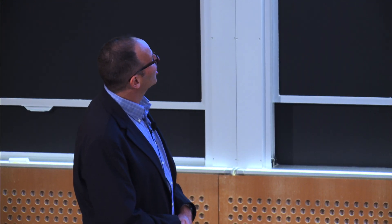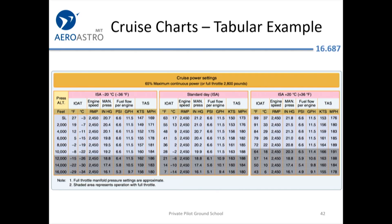Here are cruise charts from the FAA test supplement. The left chart is ISA minus 20, the middle is a standard day, and the right is ISA plus 20, a summer day. They give you fuel flow and true airspeed at various engine speed and manifold pressure settings — this looks like it's for a piston twin.